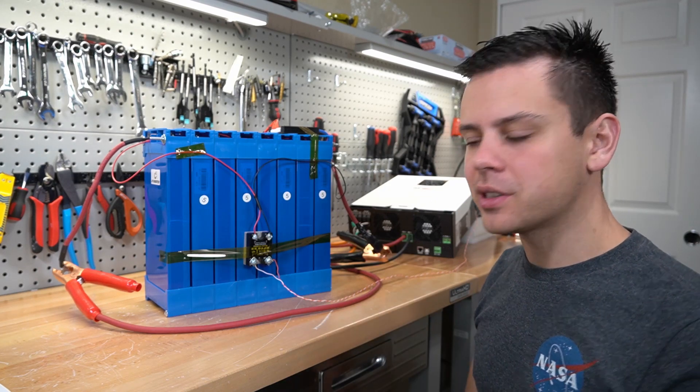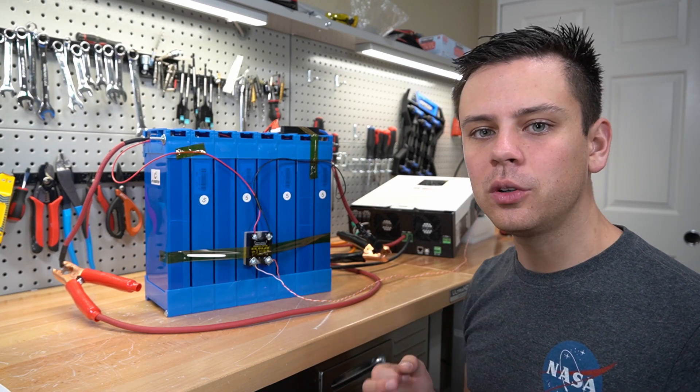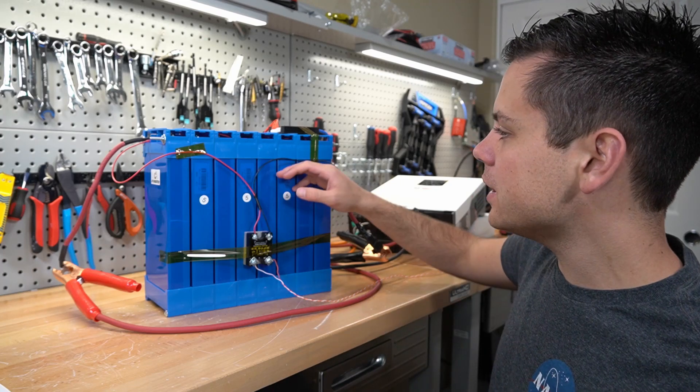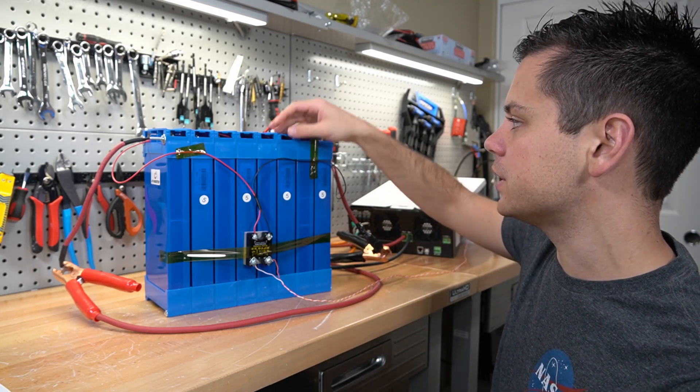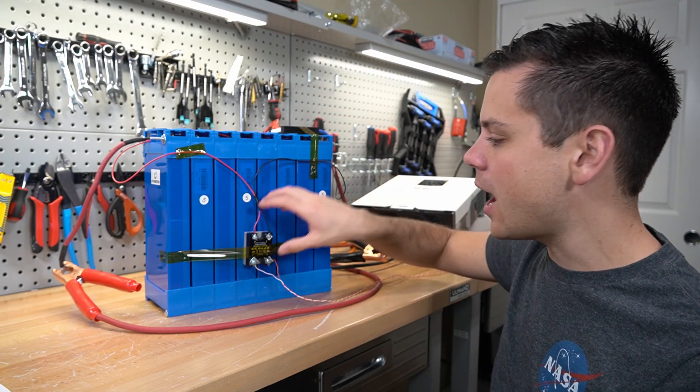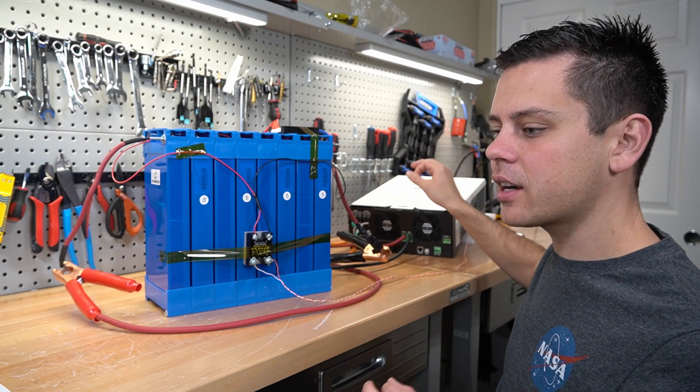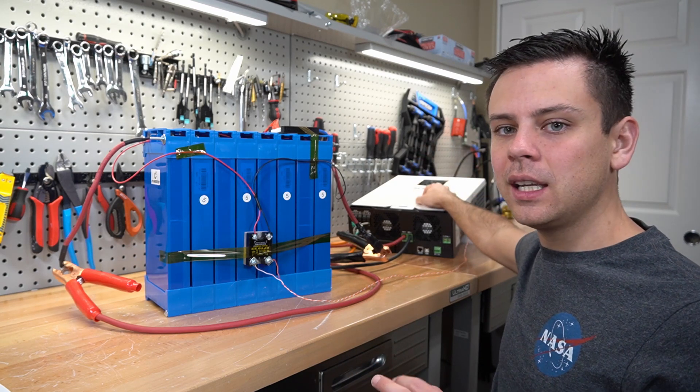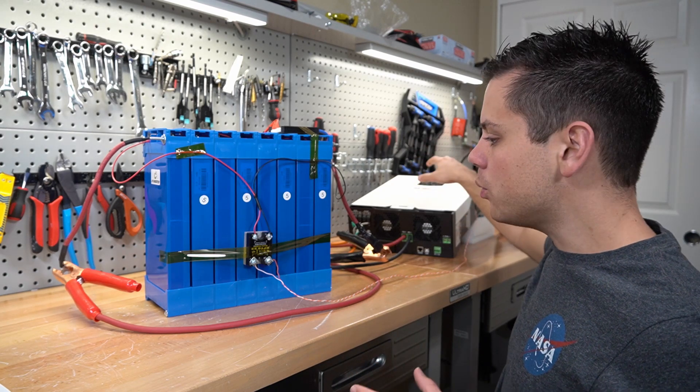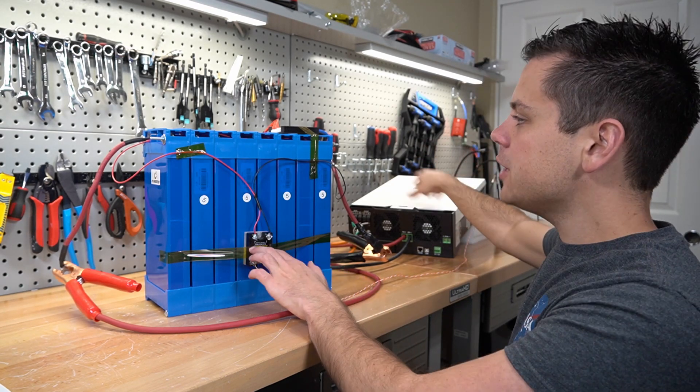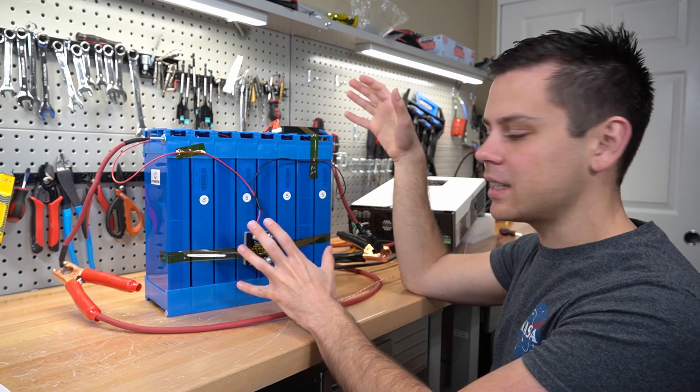One downside of this system that you see in front of you is there is no high voltage disconnect. So if one of these cells rises too high in voltage, the BMS will shut down power. But guess what? This only controls the output of the inverter. It does not control the MPPT or the AC charger. So it will continue to charge even if the BMS says to disconnect everything.